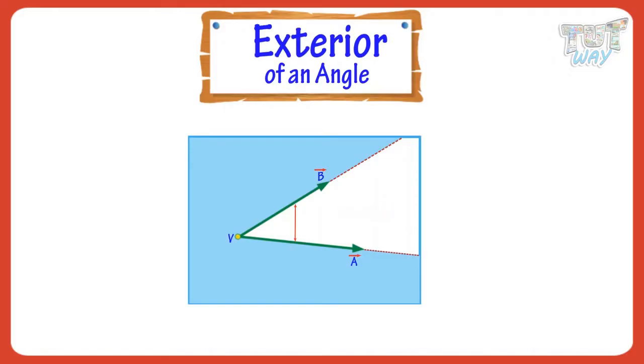Exterior: It is the space outside the two straight lines. It extends even beyond the ends of line segments. Here, the area marked with blue is the exterior of the angle.